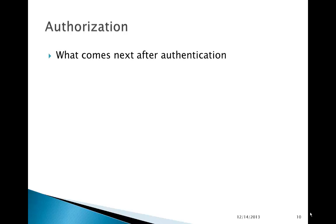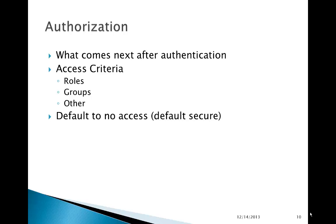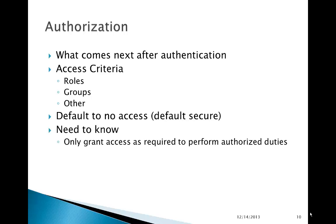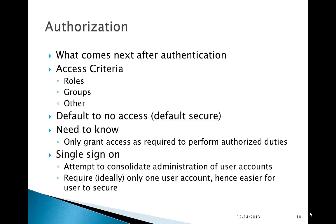Authorization comes next after authentication. Access criteria can be defined by roles, groups, or other means. You should have a default of no access — if a particular user or principal does not fit into a specifically defined access role or group, they should be provided no access. Authorization also implies a need-to-know policy: access should be granted only when required to perform authorized duties. Single sign-on is an attempt to consolidate administration of user accounts, requiring ideally only one user account, hence it's easier for the user to secure.